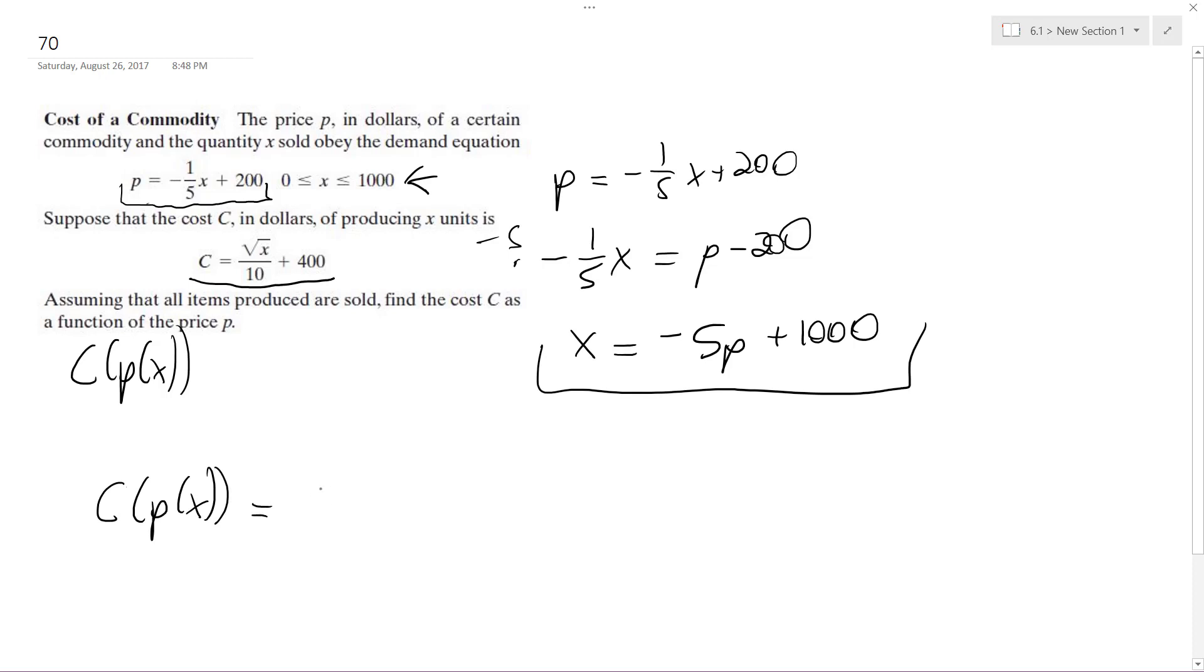It's gonna be equal to square root of negative 5P plus 1000, divided by 10, plus 400. Alright, let's see here, can't really factor out, so yeah, that's pretty much it.